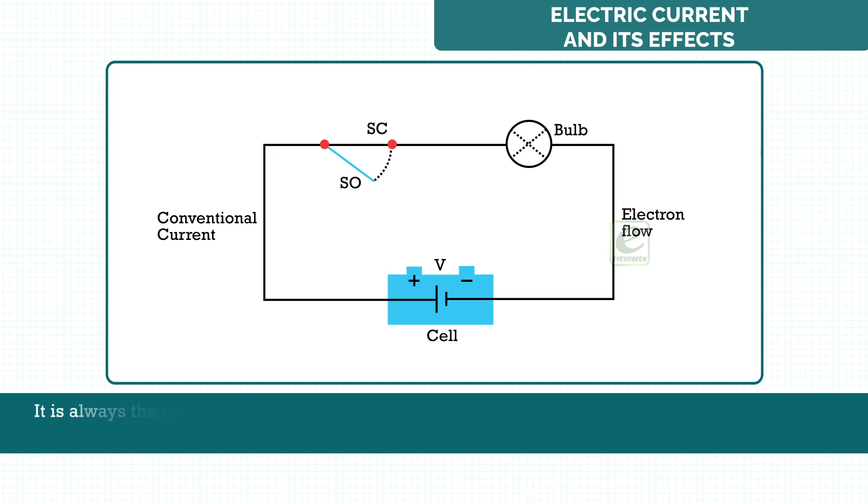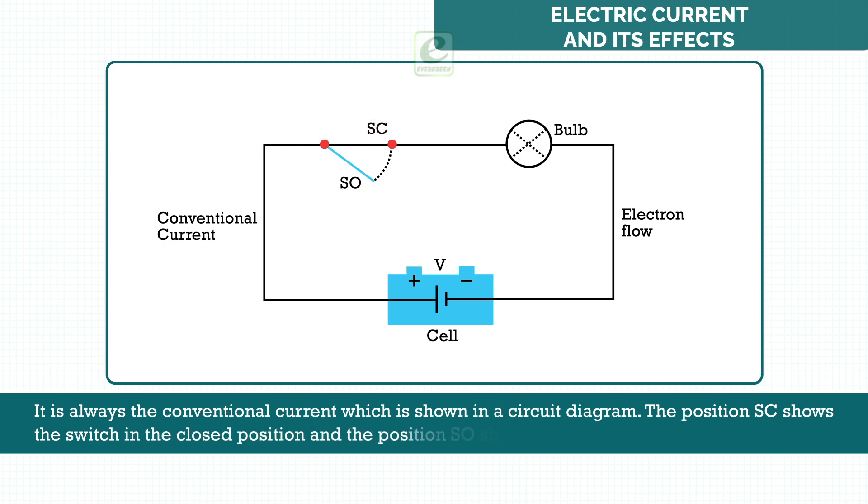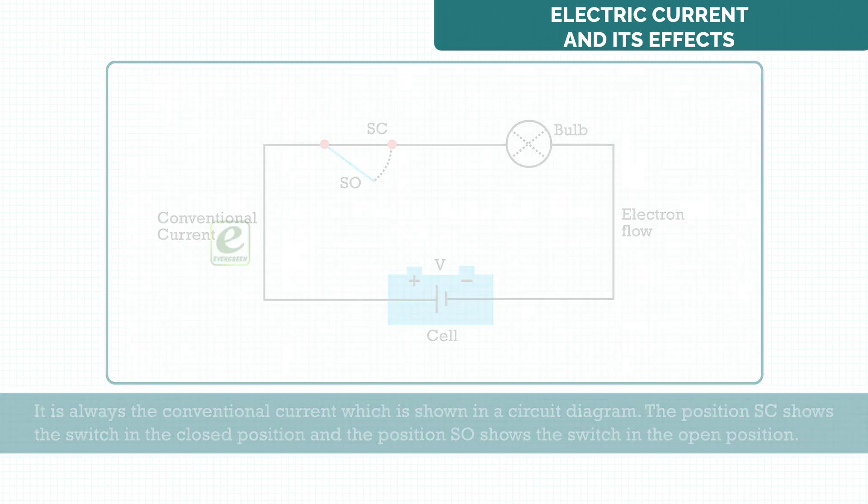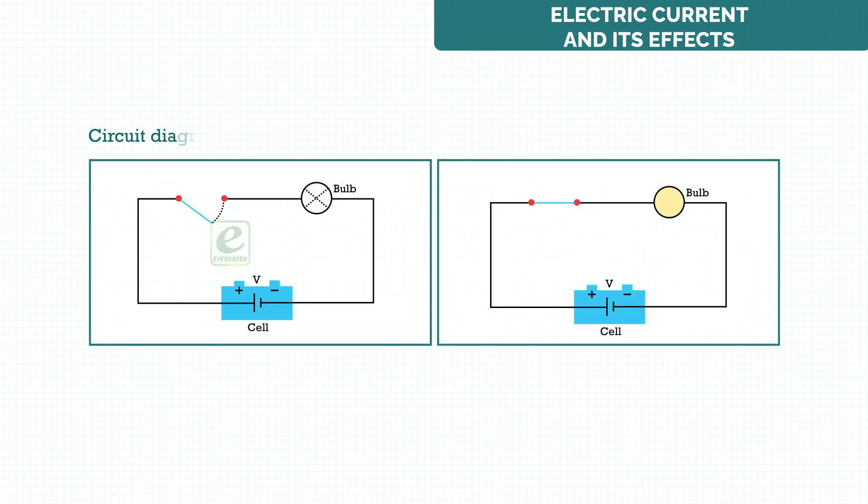It is always the conventional current which is shown in a circuit diagram. The position SC shows the switch in the closed position and the position SO shows the switch in the open position. Circuit diagram for the torch in two situations: when the switch is open, when the switch is closed.